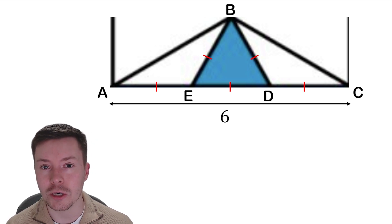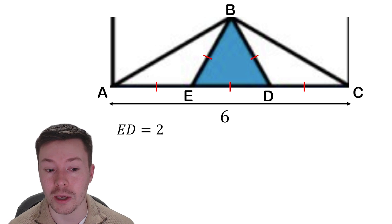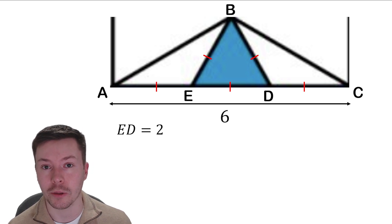What that then means is that we split that 6 up into three and so we get the side length of our equilateral triangle as being 2. Six divided by three is 2.